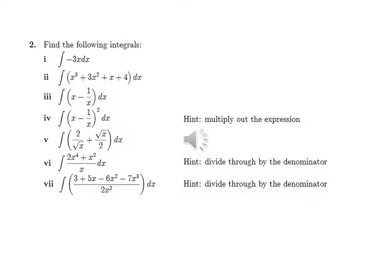Also find the integral of (3 + 5x minus 6x² minus 7x to the power three-halves) over 2x² dx — hint: divide through by the denominator. I want you to solve these exercises very closely and clarify the results.